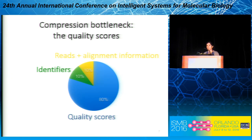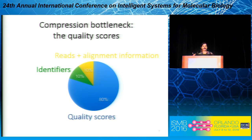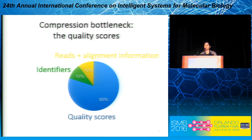One of the questions we wanted to ask is whether we can decrease the size of the CRAM file further. If you look at the compressed size, you realize that the current bottleneck is the quality scores, which occupy about 70 to 80% of the compressed file. Quality scores indicate the reliability of each of the base pairs generated by the sequencing machine. The reason they occupy such a large fraction is that the alphabet is much larger — about 40 — they are also noisy, and therefore the entropy is higher, making them more difficult to compress.